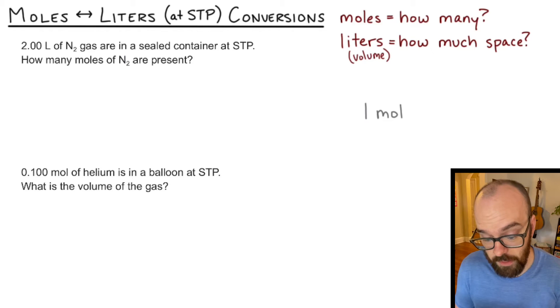In this case, we have a conversion factor for that. One mole of a gas at standard temperature and pressure is always going to take up 22.4 liters of space. Now that's a pretty big volume. Think of a two liter soda bottle. This is about 11 times that size. So one mole of a gas at standard temperature pressure takes up a lot of space.